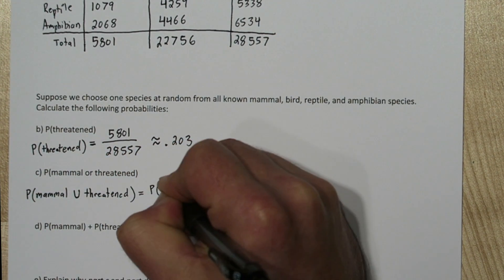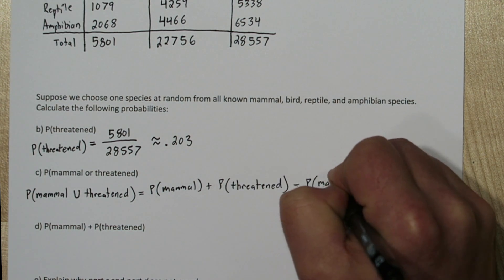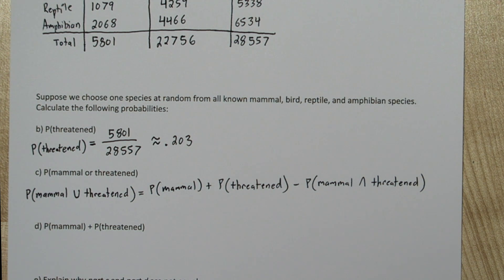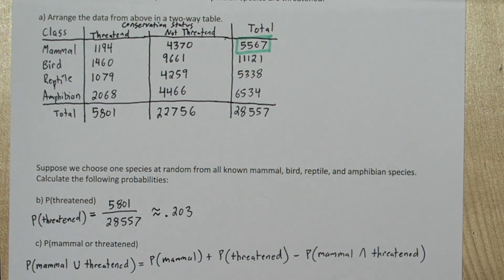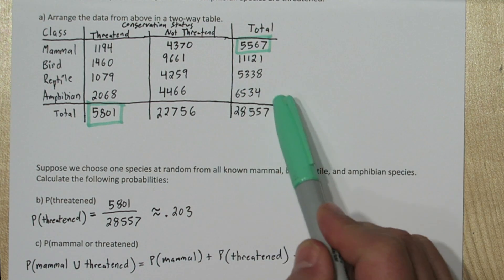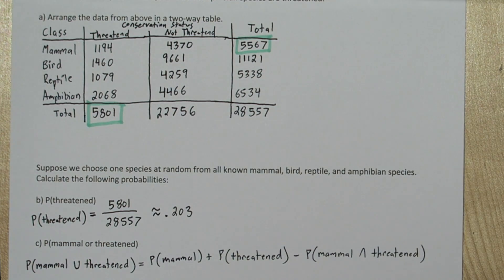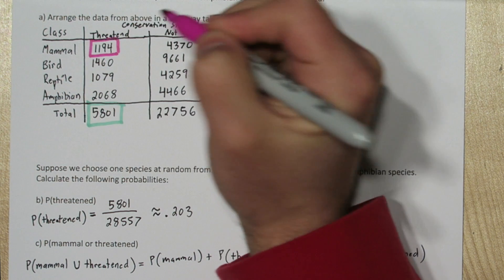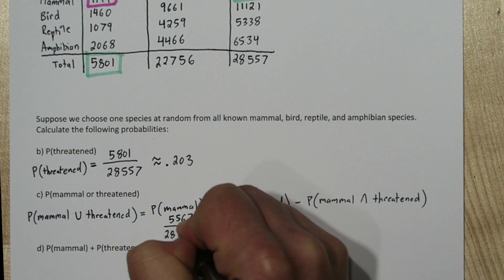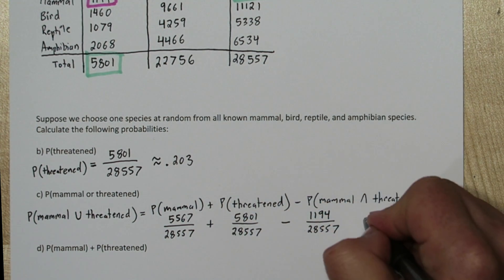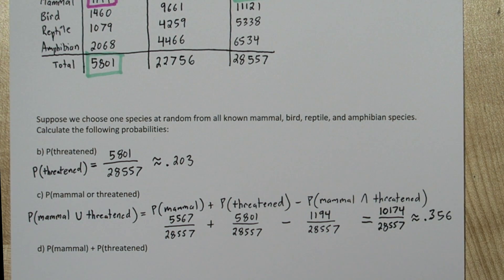The probability of selecting a mammal or a threatened species equals the probability of mammal plus the probability of threatened, minus the probability of a mammal that is also threatened. If we don't subtract that last quantity, we double-count all mammals that are also threatened. There are 5,567 mammals and 5,801 threatened species, but we must subtract the 1,194 species counted in both. That gives us 10,174 mammals or threatened species out of 28,557, so the probability is approximately 0.356.